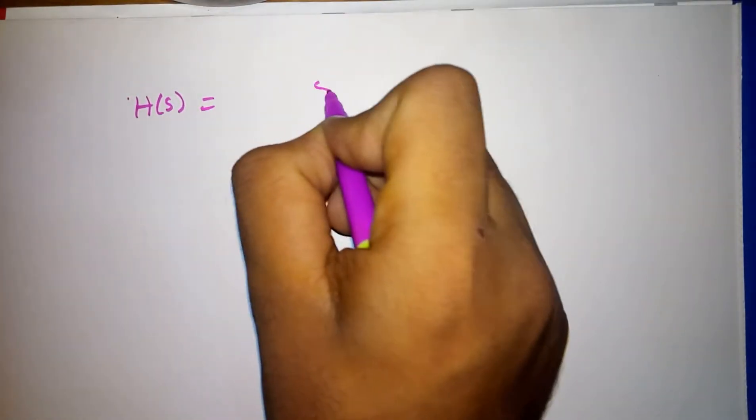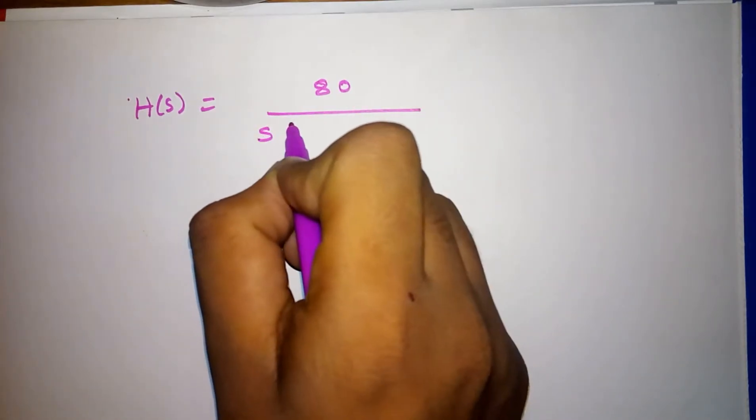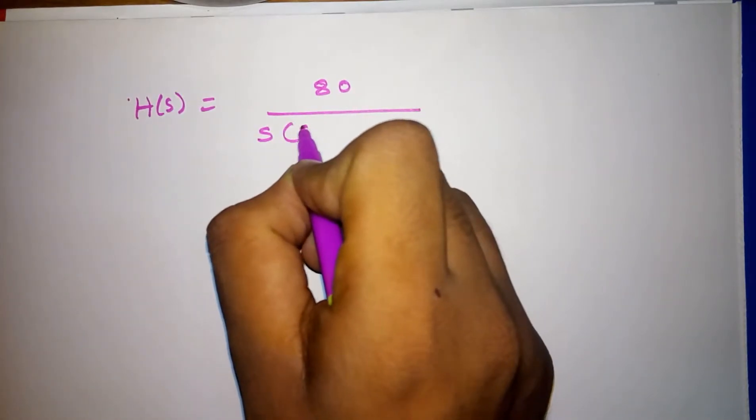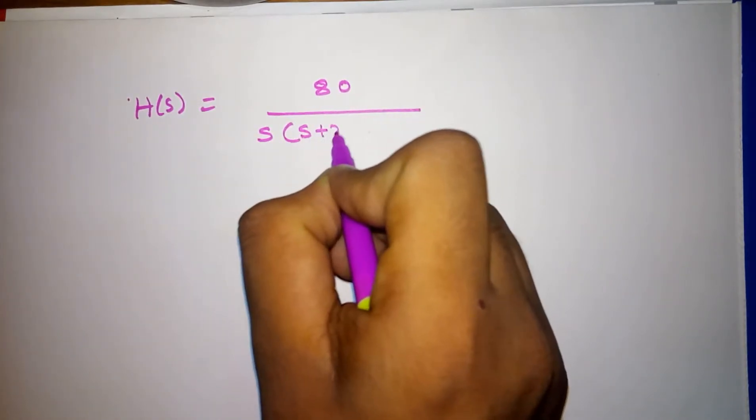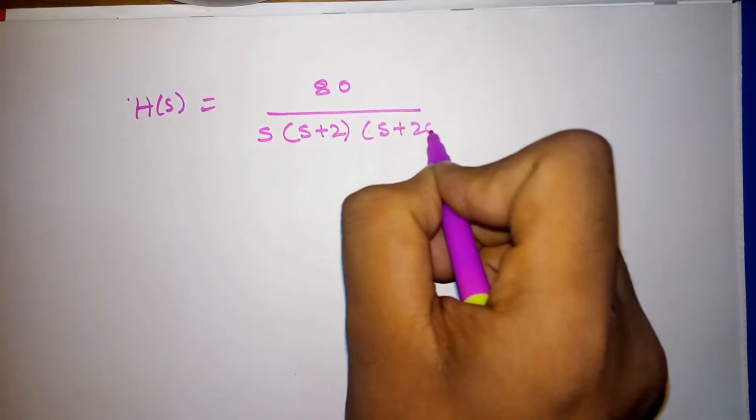If we solve one problem, we shall understand it better. Let us consider a transfer function in Laplace domain. H(s) is equal to 80 divided by s into (s plus 2) into (s plus 20).